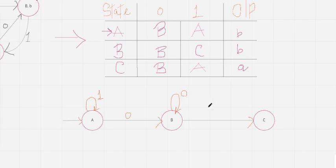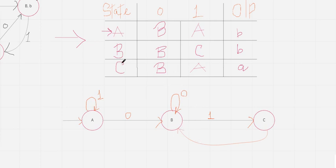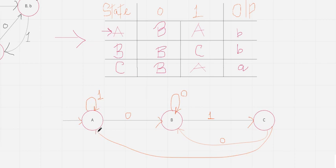We're done with state B. Moving to state C: on seeing zero it goes to B, so I make a transition from C to B labeled zero. On seeing one, state C goes to A — so that transition is labeled one. The diagram you get is the same structure as the Moore machine diagram, which makes sense. Almost everything is done; now we need to mark the outputs on the transitions for the Mealy machine.